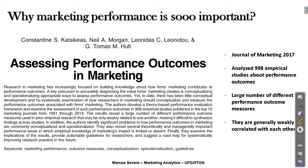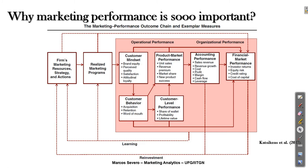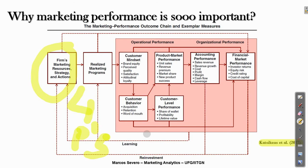In the final slide of this lecture, I want you to turn your attention to the figure in Katzikeyas' article, where they present what they define as a marketing performance outcome chain with exemplar measures. Everything starts with a firm's marketing resources, strategy, actions, and realized marketing programs — referring to the four P's of the marketing mix I briefly explained in the last lecture.